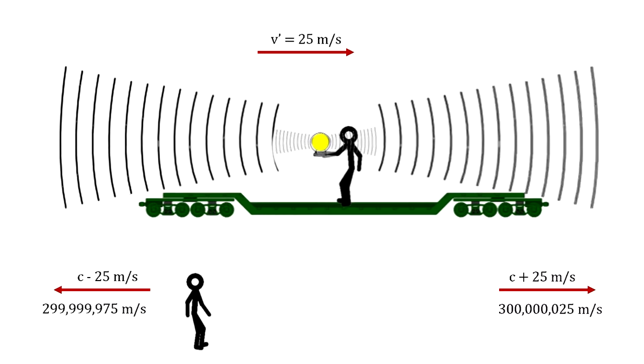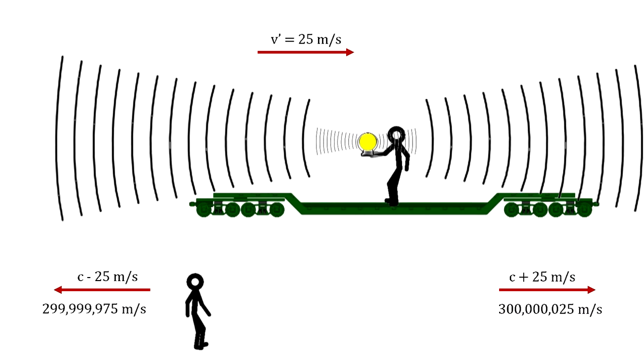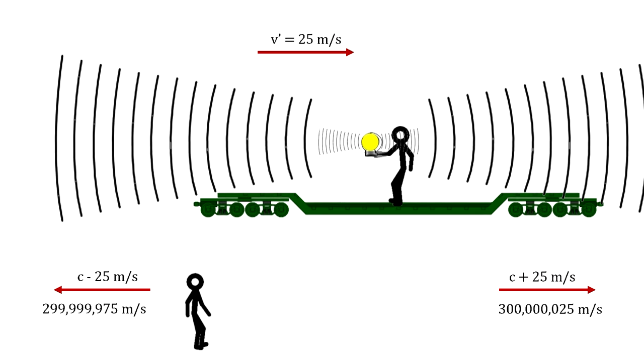In 1887, Michelson teamed up with Edward Morley and published the results of their experiment that used an interferometer to measure the differences in the speed of light from platforms moving in motion with respect to each other. We'll spend a little time here going over how they did it.